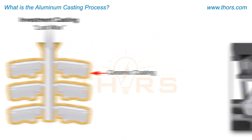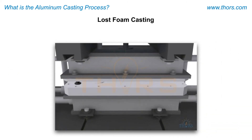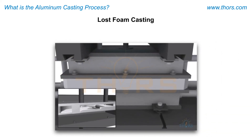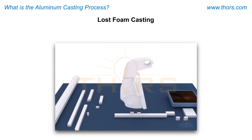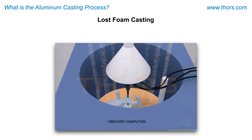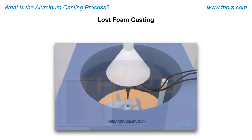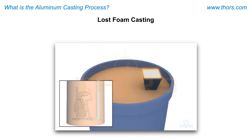The lost foam casting process uses expandable polystyrene beads to create a casting shape, along with the required feeding and running systems. The shape is placed in loose sand and vibrated. Once poured, the molten metal sublimates the foam, which is then lost.